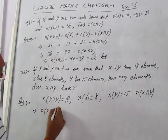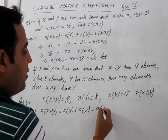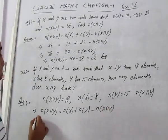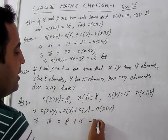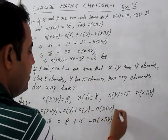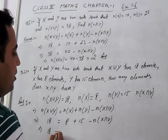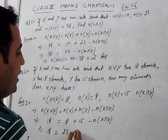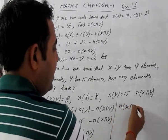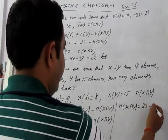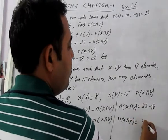Putting all the values: 18 = 8 + 15 - n(X∩Y). We get 18 = 23 - n(X∩Y), so n(X∩Y) = 23 - 18 = 5. This is the answer.